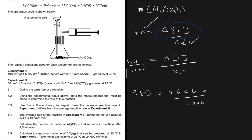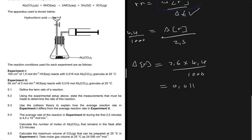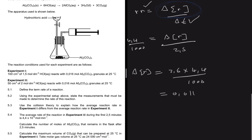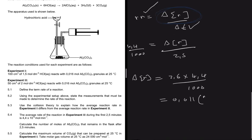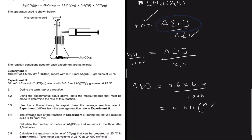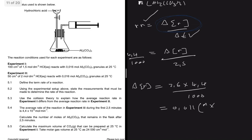The calculation gives 0.011. For the units: 2.5 is in minutes, multiplied by the reaction rate in mol/min, so the minutes cancel out and we are left with 0.011 moles — not moles per dm³. So the change in the number of moles of aluminium carbonate consumed in 2.5 minutes is 0.011 mol.